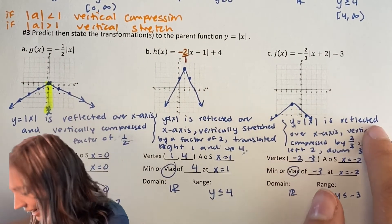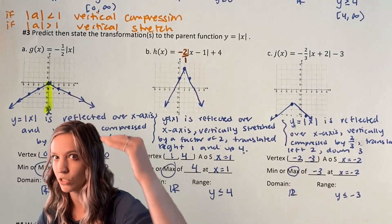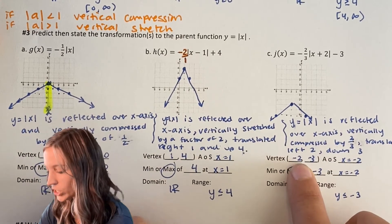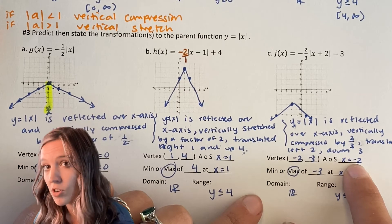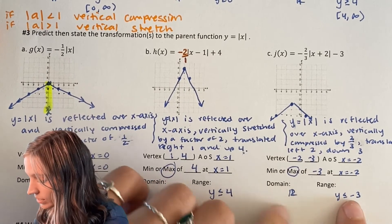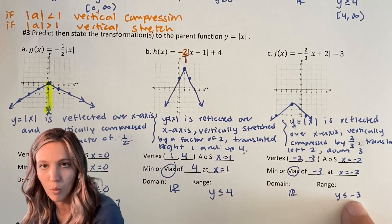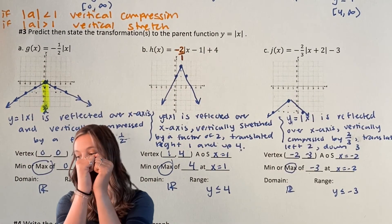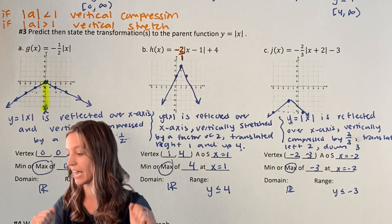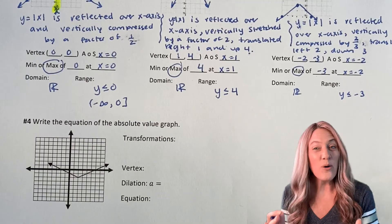Last function j(x): reflected over the x-axis because of the negative sign, vertically compressed by a factor of two thirds (since two thirds is less than one), translated left two and down three. Vertex is (−2, −3); axis of symmetry x = −2; maximum of negative three at x = −2; domain all real numbers; range y ≤ −3. Pattern points were down two over three from the vertex to draw the reflected, compressed graph.